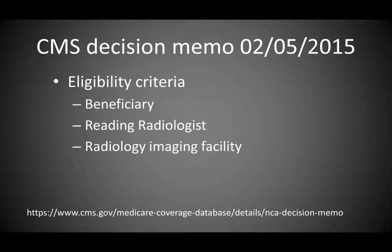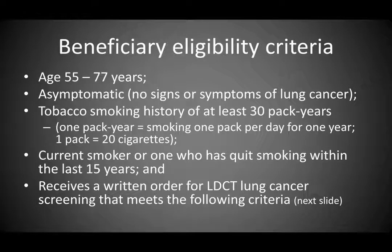The CMS decision memo, issued in February 2015, defined eligibility criteria in three groups: the beneficiary (patient), the reading radiologist, and the radiology imaging facility. To receive CMS reimbursement for screening a Medicare patient, you must meet all criteria. The patient must be aged 55 to 77, asymptomatic for lung cancer, have a tobacco smoking history of at least 30 pack-years, be a current smoker or one who has quit within the last 15 years, and receive a written order for low-dose CT lung cancer screening that meets specific criteria.